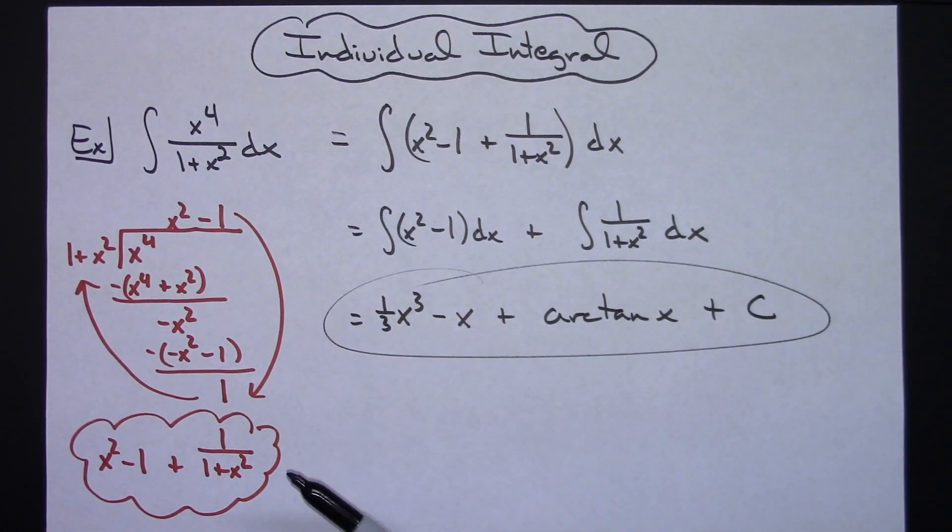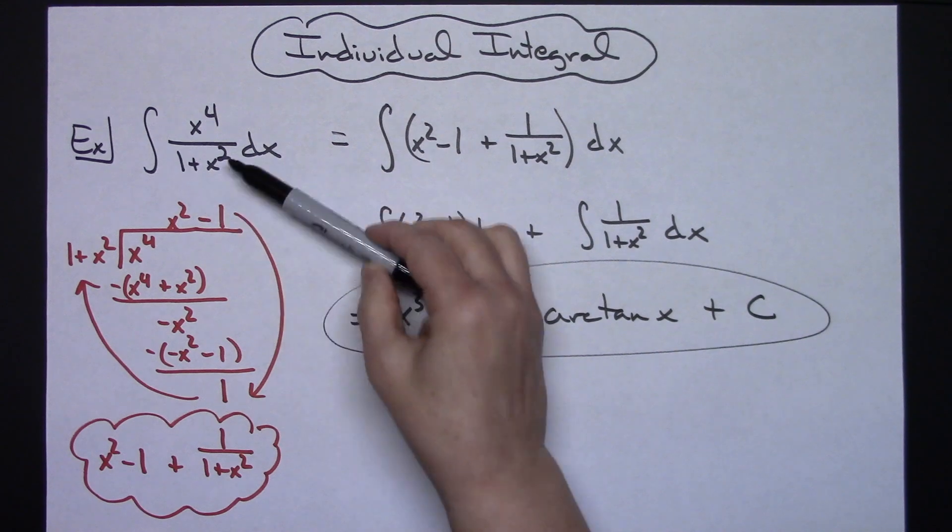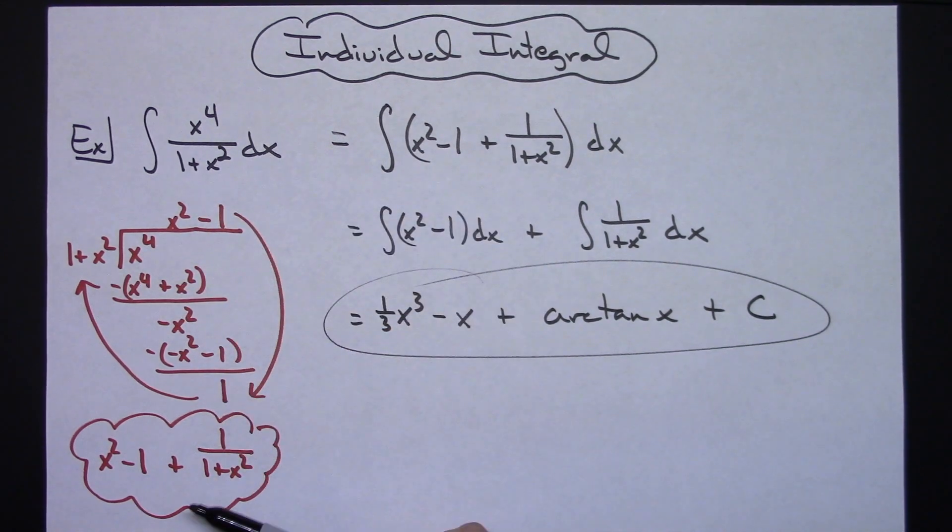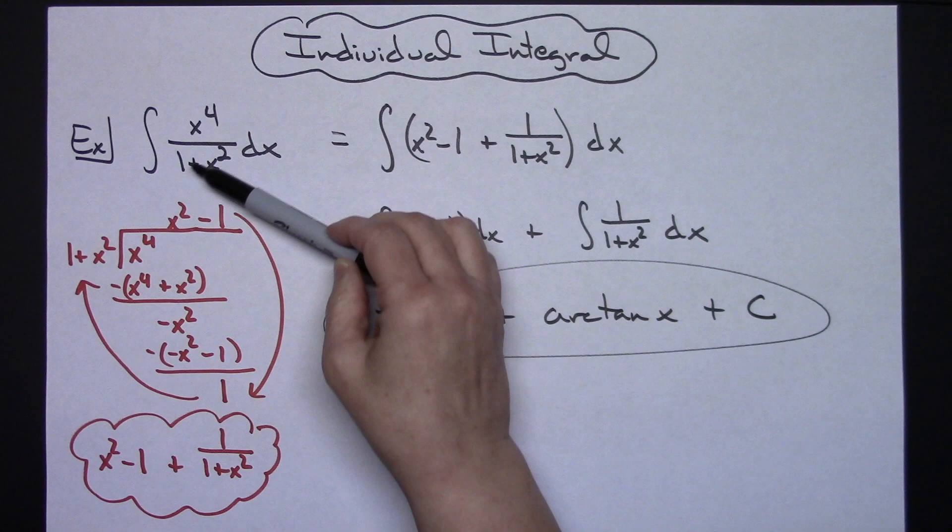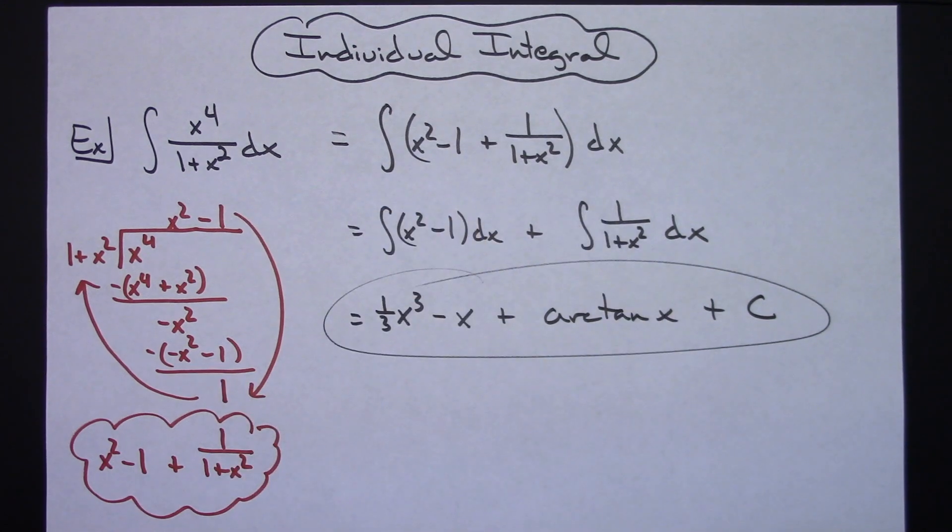So after you take that initial step of working with that rational expression, doing a little bit of long division, coming up with an equivalent expression for that, it integrates a whole lot simpler.